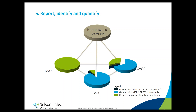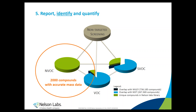That is the reason why at Nelson Labs, we have injected 2,000 compounds. In practice, if we perform an extraction of your medical device, we can identify 2,000 compounds with a confirmed level of identity — knowing 100% that the identification is correct. There will also be different levels of quantification described in the final draft.